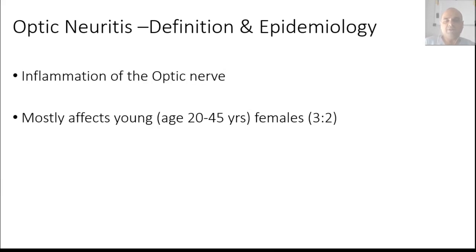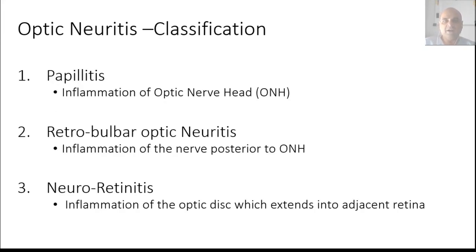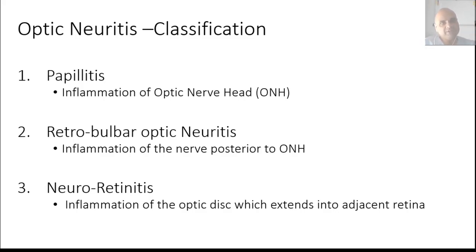Optic neuritis is inflammation of the optic nerve. It mostly affects younger individuals between 20 and 45 years of age, and mostly females in a ratio of three to two, so about 66 percent of patients are female. It is classified into three types: papillitis, which is inflammation of the optic nerve head; retrobulbar optic neuritis, which is inflammation of the part of the optic nerve behind the optic nerve head; and neuroretinitis, which is inflammation of the optic disc together with the adjacent retina.